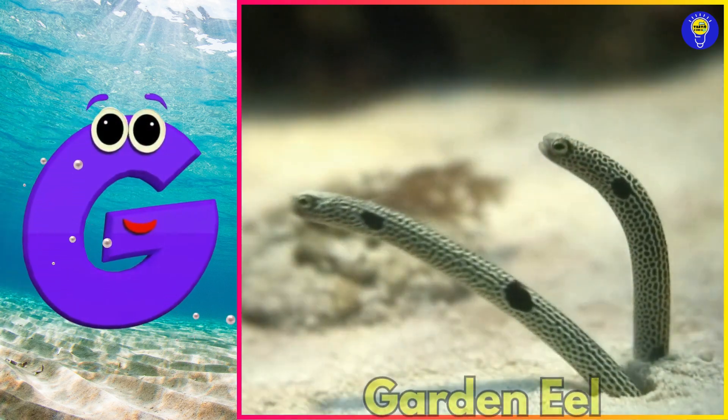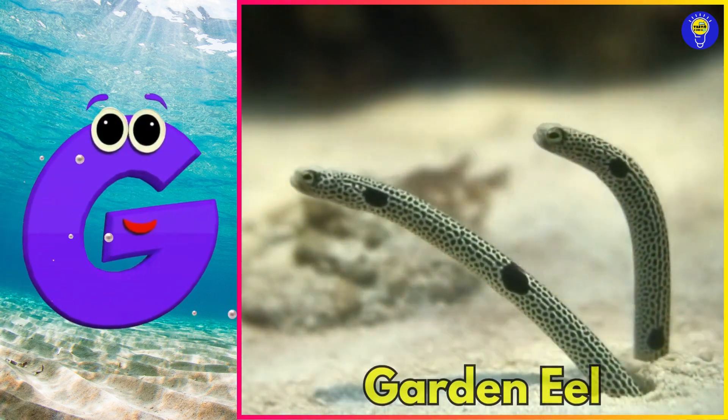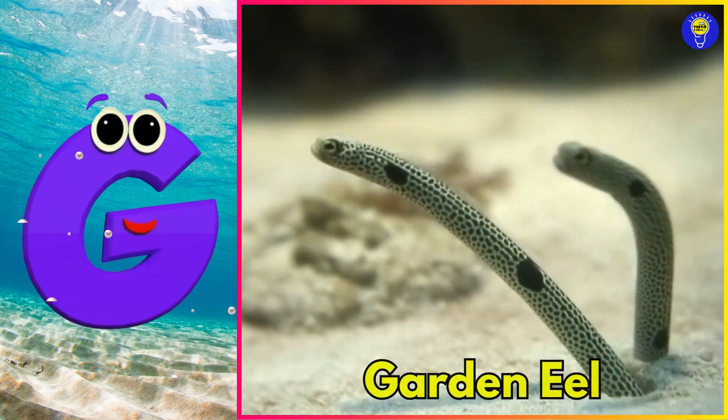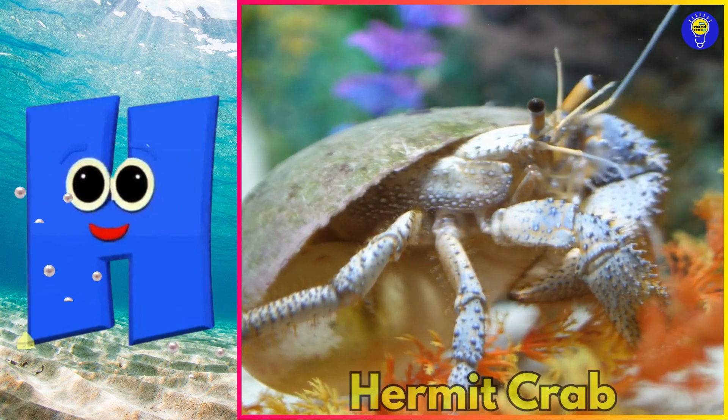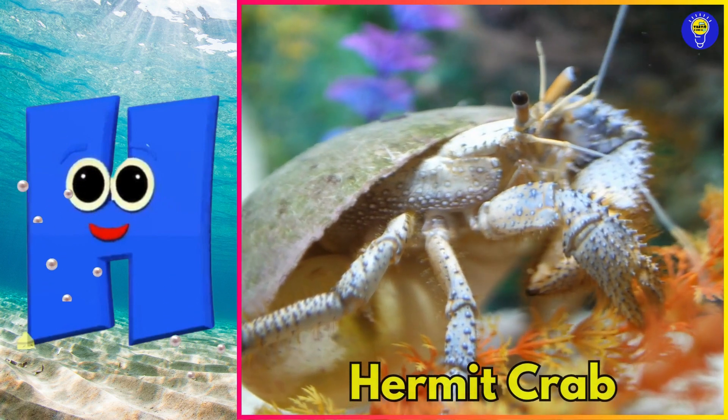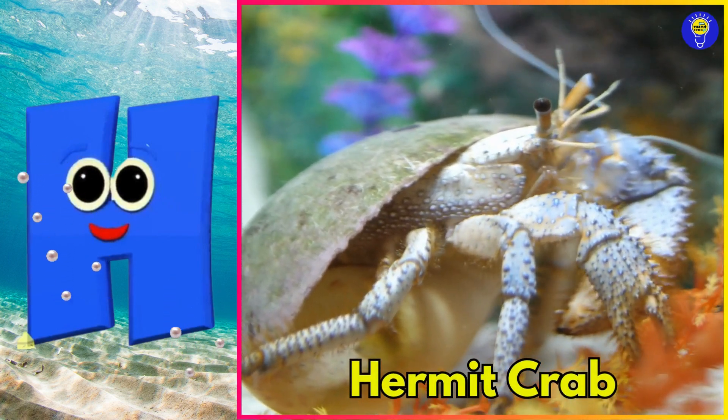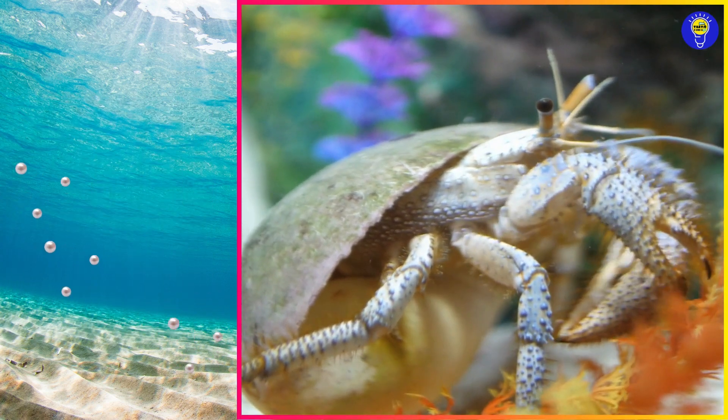G is for garden eel. Guh, garden eel. H is for hermit crab. Ha, hermit crab.